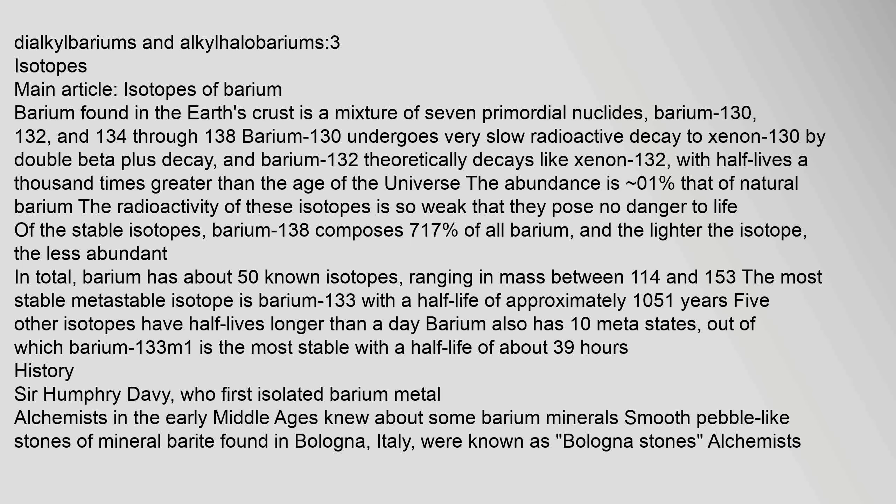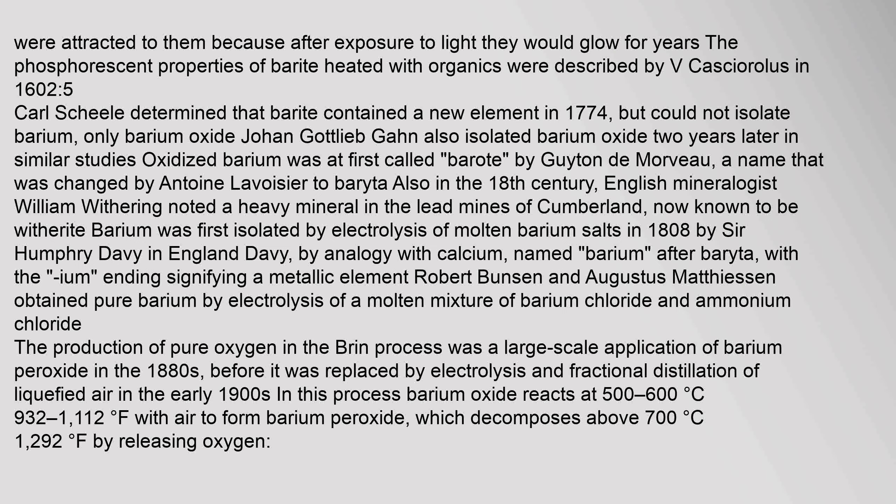In total, barium has about 50 known isotopes ranging in mass between 114 and 153. The most stable metastable isotope is barium-133 with a half-life of approximately 10.51 years. People were attracted to barium minerals because after exposure to light they would glow for years. The phosphorescent properties of barite heated with organics were described by V. Casciarolo in 1602. Carl Scheele determined that barite contained a new element in 1774 but could not isolate barium, only barium oxide. Johan Gottlieb Gahn also isolated barium oxide two years later in similar studies.